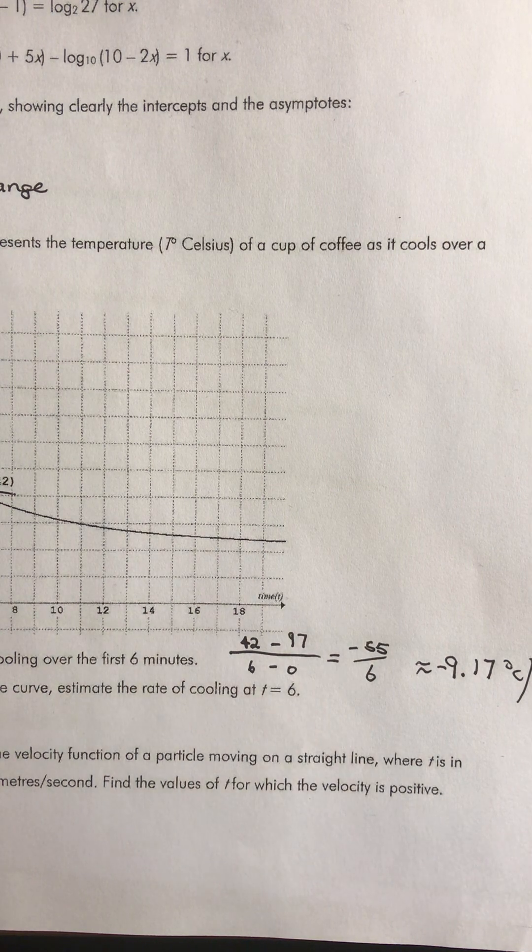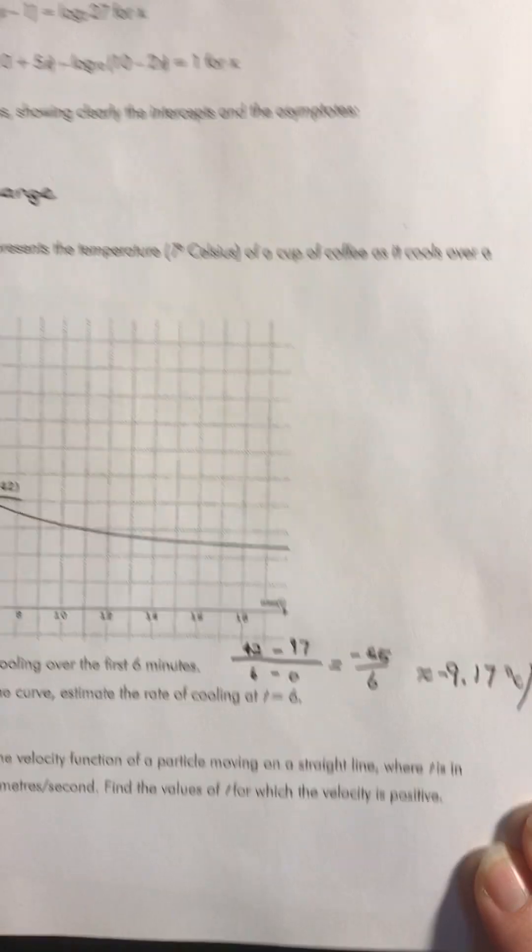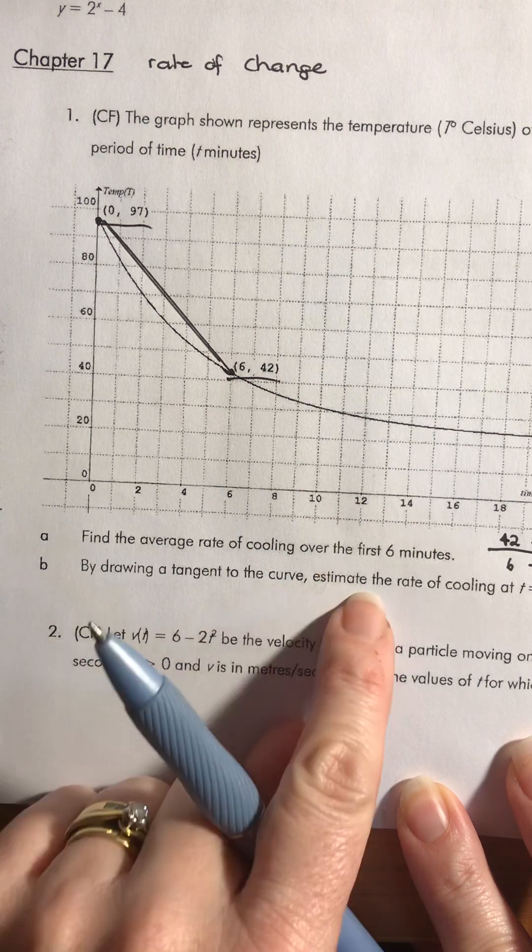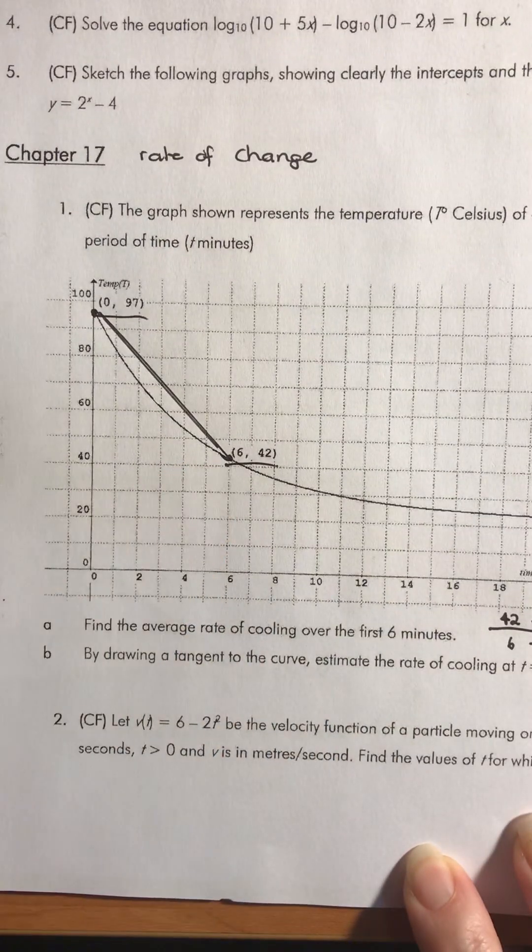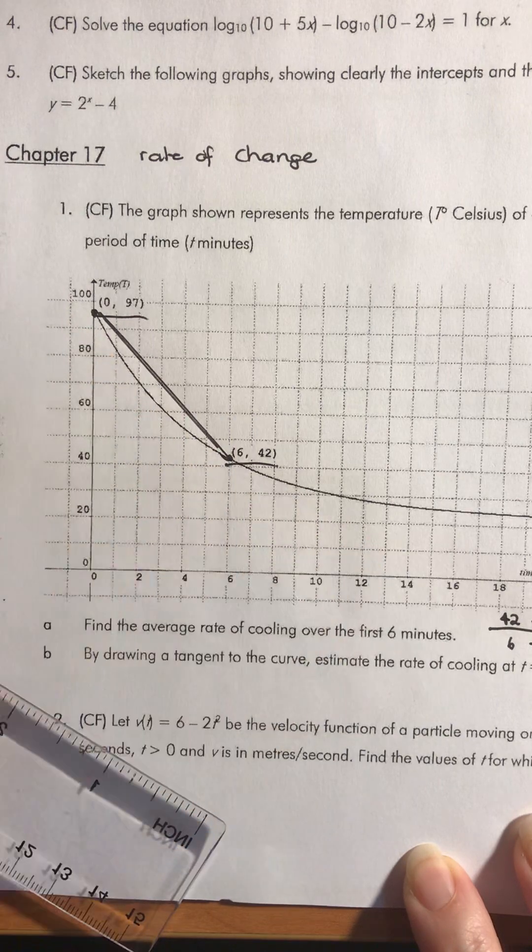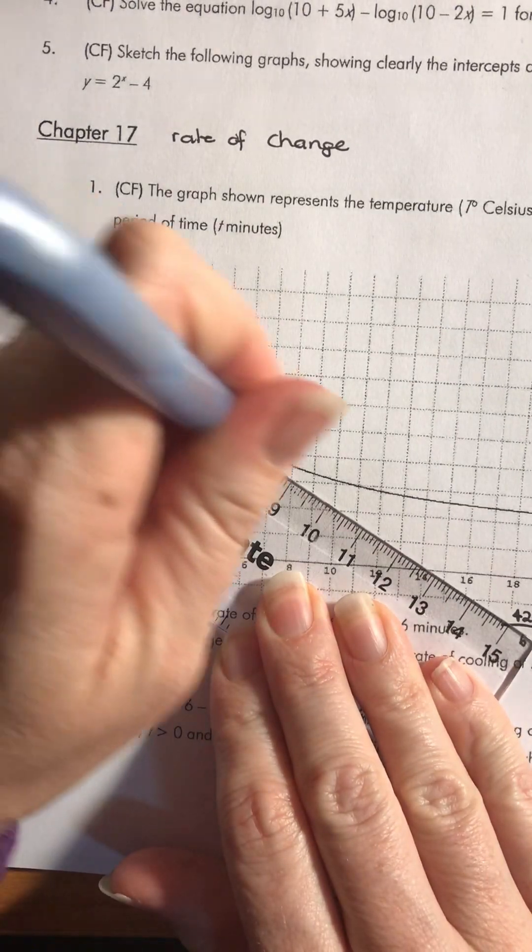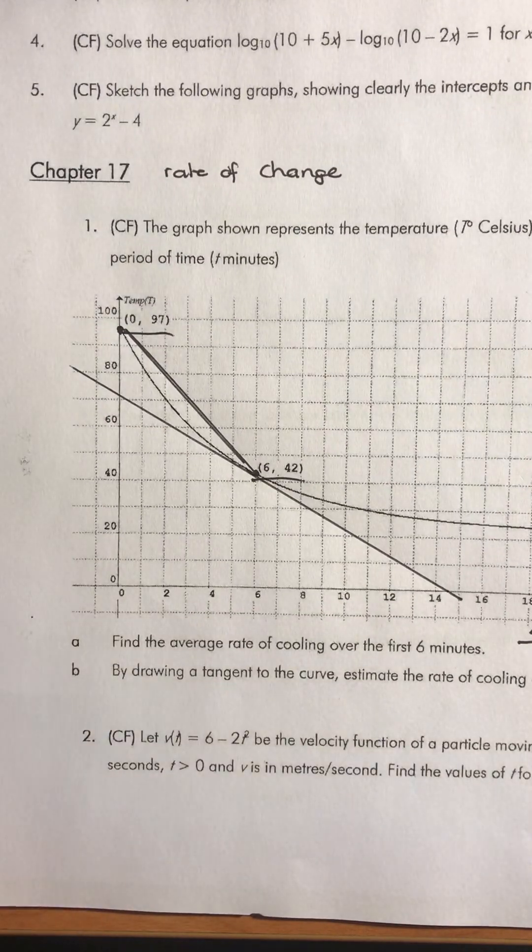We will get one-sixth there for the point one six recurring, so we could have nine and one-sixth. Then it says by drawing a tangent to the curve, estimate the rate of cooling at t equals six. So we've got our t equals six here. We're looking at this curve, drawing in what we think looks like the tangent line there.